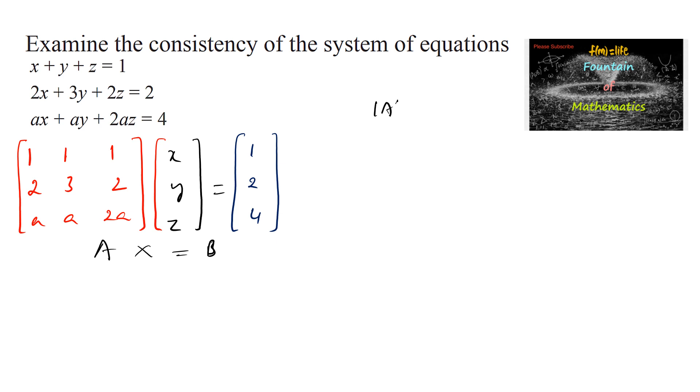We know that if det(A) is not equal to 0, the given system has a unique solution and hence is consistent. If det(A) equals 0, then we need to find adj(A)·b. If it equals 0, we can say infinite solutions, consistent. If it's not equal to 0, we can say inconsistent, no solution.